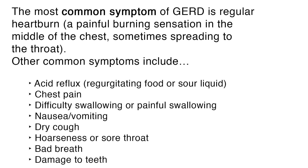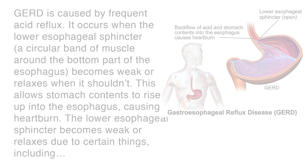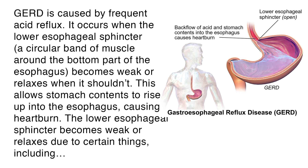GERD is caused by frequent acid reflux. It occurs when the lower esophageal sphincter, a circular band of muscle around the bottom part of the esophagus, becomes weak or relaxes when it shouldn't. This allows stomach contents to rise up into the esophagus causing heartburn.